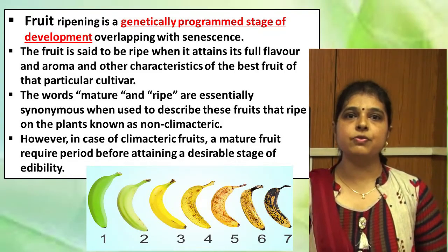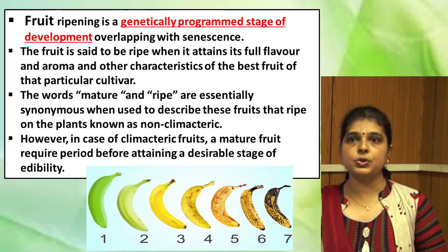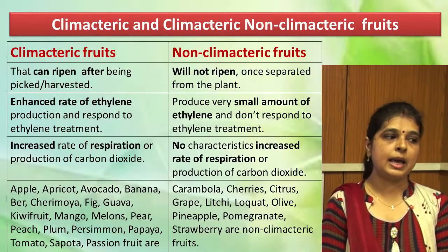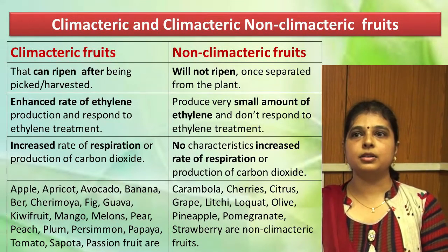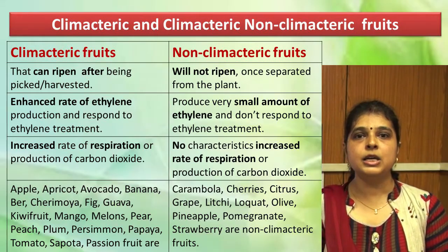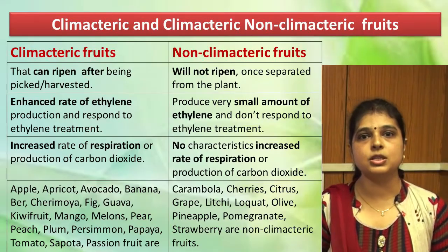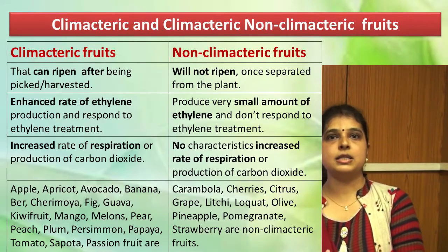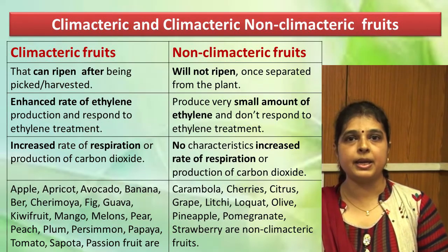There are mainly two types of fruits: climacteric fruits and non-climacteric fruits. Climacteric fruits are fruits which go on ripening even after harvest — for example banana and mango; even after you pick them, the ripening process starts on its own. Non-climacteric fruits, once separated from the plant, are not going to ripen anymore.